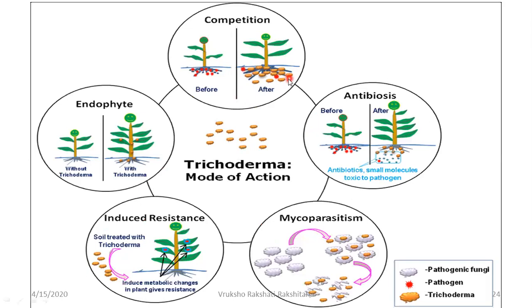This pic depicts all the different mechanisms of action. You can see the growth of the plant before and after using Trichoderma. Trichoderma competes with the pathogen; it shows antibiosis; it shows mycoparasitism; when soil is treated with Trichoderma it induces resistance in the plants, making the plant itself resist attack by other fungi. Trichoderma also acts as an endophyte, which is also beneficial to the plant.